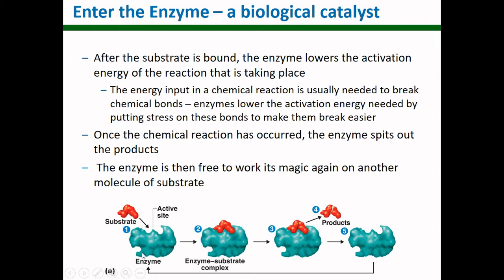Here's a step-by-step picture of what that looks like. First, the substrate binds in the active site. The enzyme does work on the substrate, puts stress on those chemical bonds, and makes them break easier. The chemical bonds break, new bonds form, and the substrate has been transformed into products. Those products then leave the enzyme, and the enzyme is empty and free to go on and do more enzyme work.